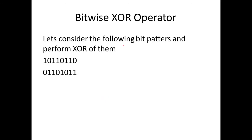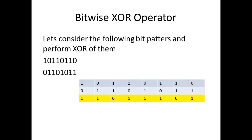Let's take another example. Can you tell me the result of a bitwise XOR of these two bit patterns? Here is the result. Whenever one of the bits is a 1 the output will be a 1. So here one of the bits is a 1, output is 1. Both the bits are 1, so output is 0. One of the bits is a 1, so output is 1. Again 1, again 1. Here both the bits are 1 so it's 0. Here one of the bits is a 1, so it's 1. That is the result of our XOR operation between these two bit patterns.